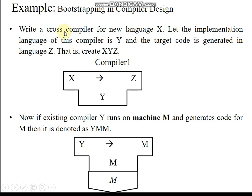Now we will see an example: creating a cross compiler for a new language X. X is handled by compiler Y. This compiler Y is implemented in language Y, converting X into target code EJ. For example, a C compiler written in Visual C++ takes C code (X) and converts it into object code (EJ). This VC++ compiler was itself compiled by another programming language M, which handles VC++ code and converts it into the corresponding machine code, supported by machine M.